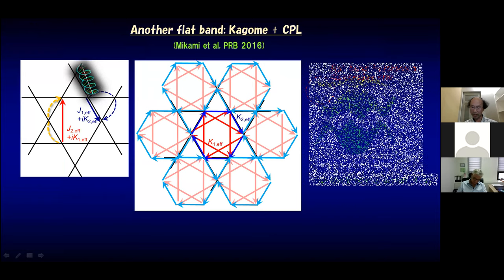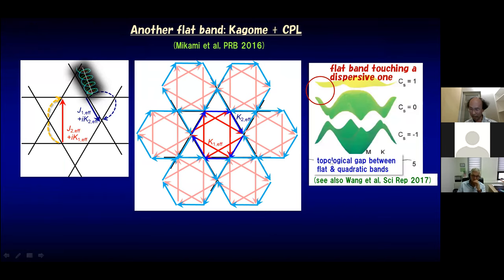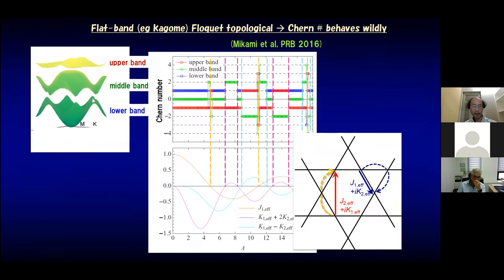In this phase we also have a topological gap between flat and quadratic bands. If you look at the Chern number — Kagome is a three-band system — putting the Chern number for the upper band, middle band in green, and lower band in red, they behave quite wildly against the laser intensity.